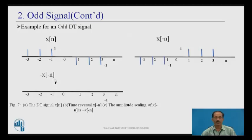Next, amplitude scale by -1: the signals present below the x-axis will shift to above the x-axis, and signals above the x-axis will shift to below. This is x(n), and this is -x(-n). These two are the same, therefore it is an odd signal.